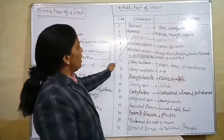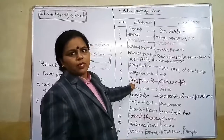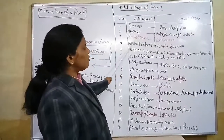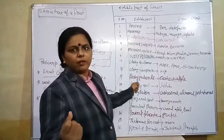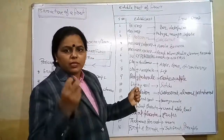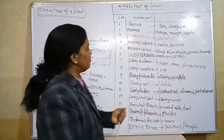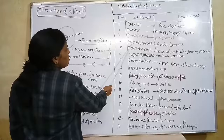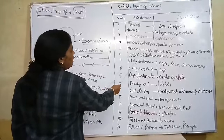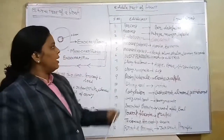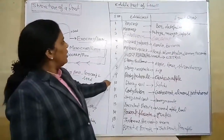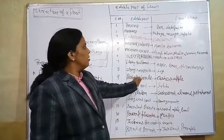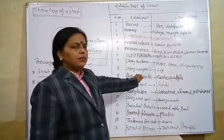The next edible part is endocarp. In coconut, the endosperm is a liquid portion which gets converted into solid form. The next one is mesocarp and endocarp together — mesocarp and endocarp are the edible portion in amla and banana.